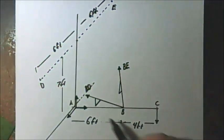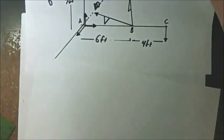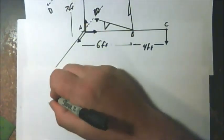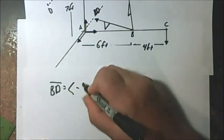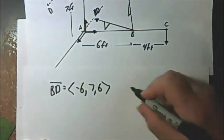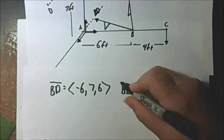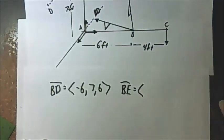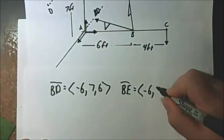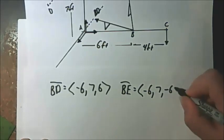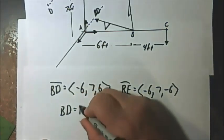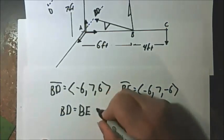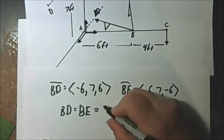What I want you to realize here — the magnitude of these vectors when we set these up: vector BD is (-6, 7, 6) and BE is (-6, 7, -6). Both of these, BD and BE, have the same magnitude, which is 11.